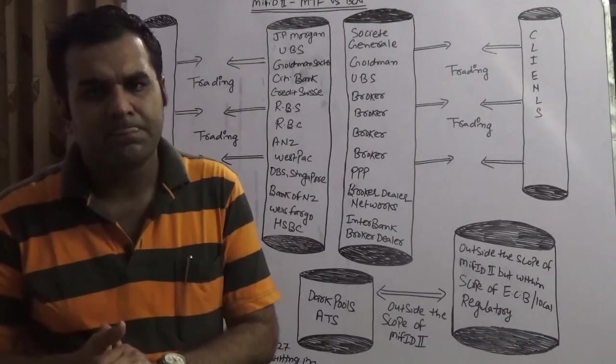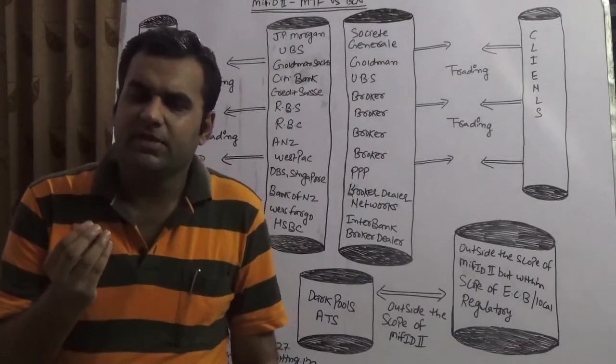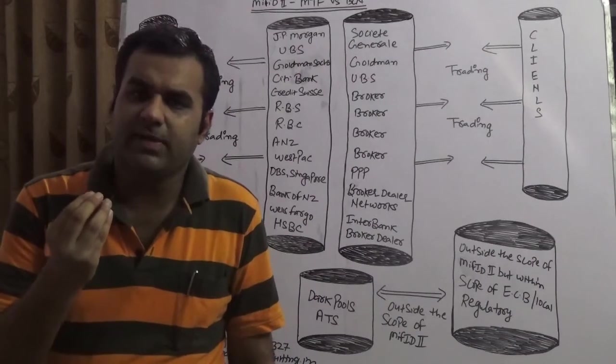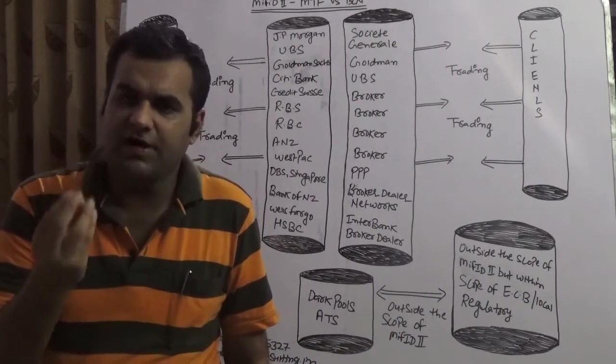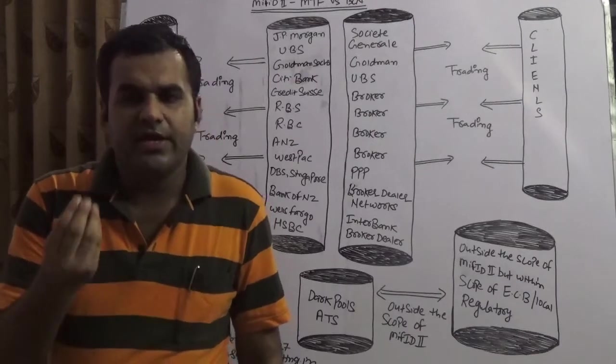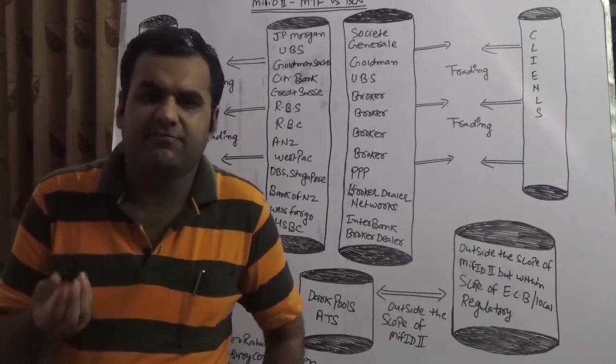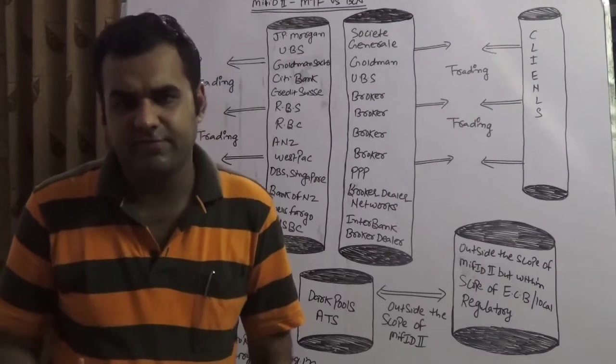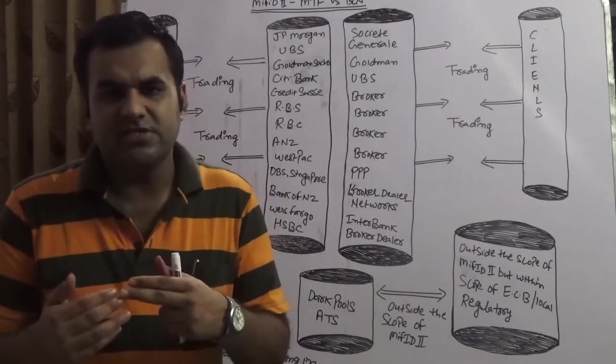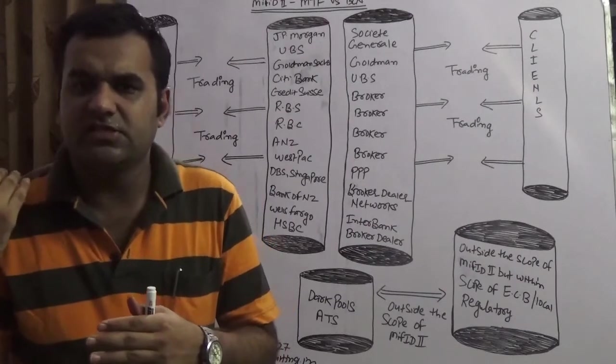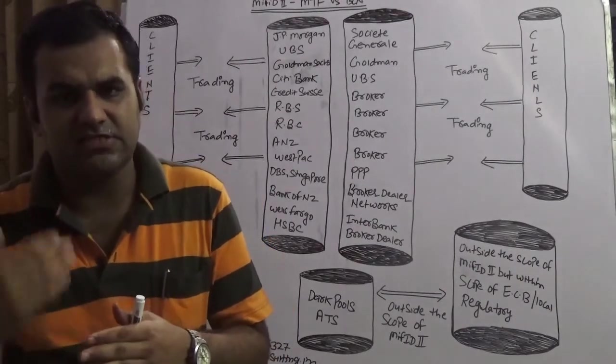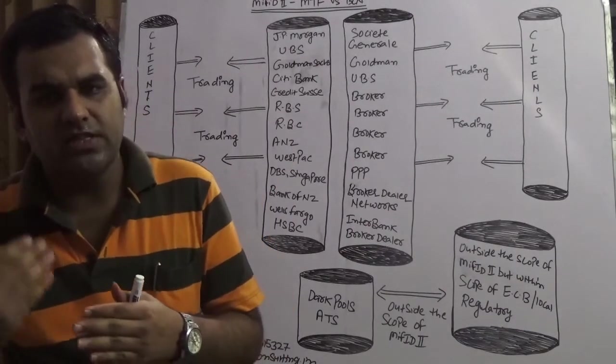Broker crossing network means a platform which is created specifically by a bank, hedge fund, or it could be a high frequency trading system depending upon the speed. If a bank would be creating it, it won't be a high frequency trading because high frequency trading means split second.